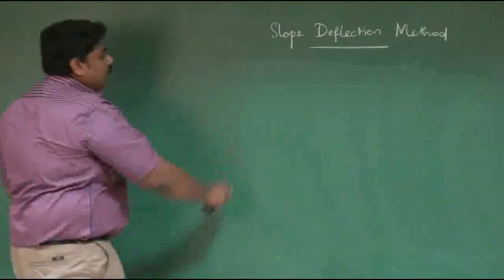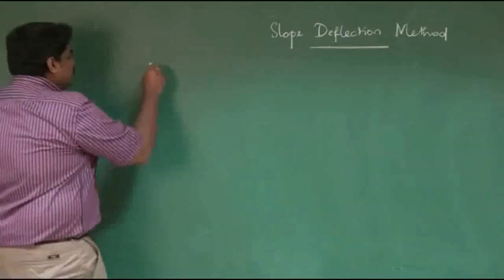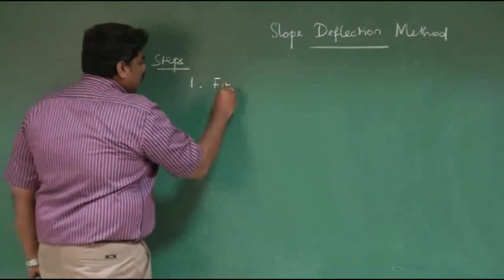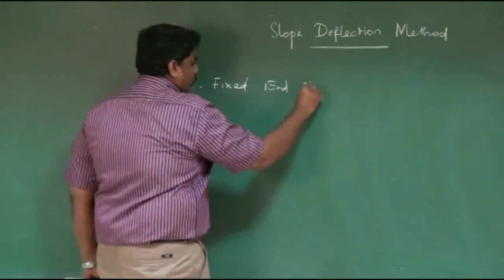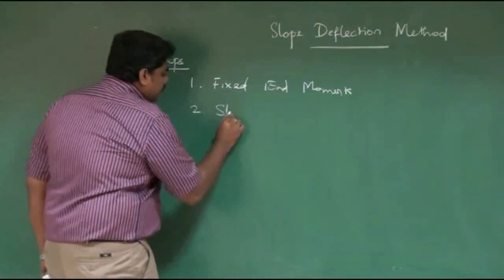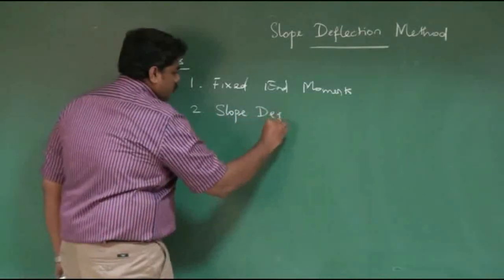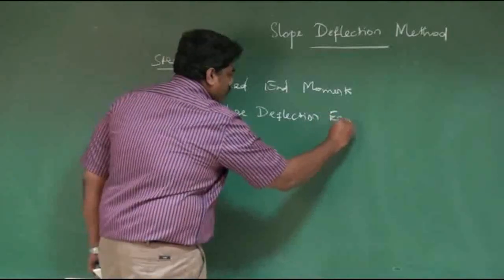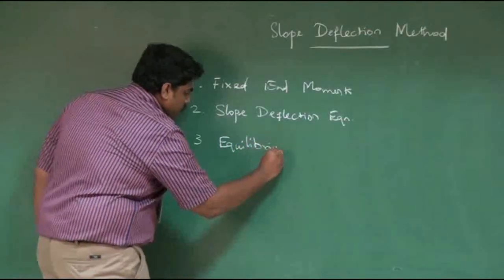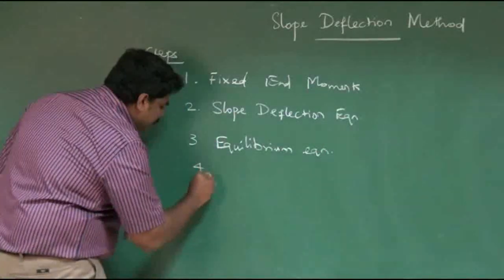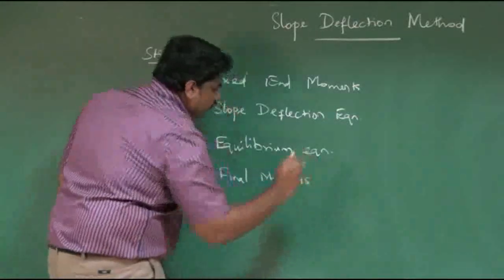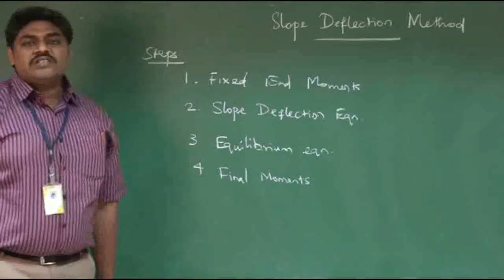The solving of this particular method has four steps. The first step is calculating the fixed end moments. The second step is the slope deflection equation. The third step is the equilibrium equation. And the last step is the final moments. These are the four steps which we have to follow to solve a particular structure using the slope deflection method.